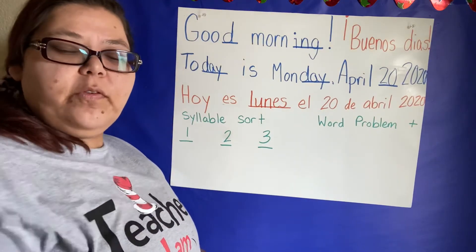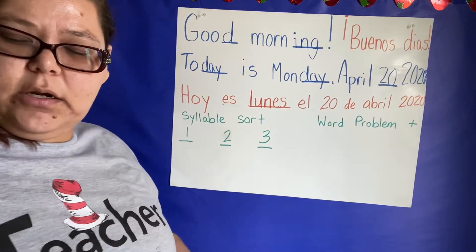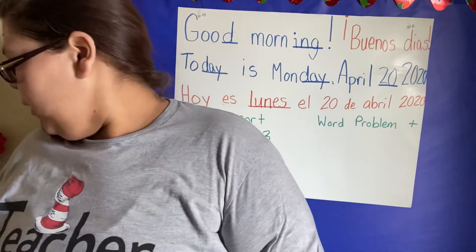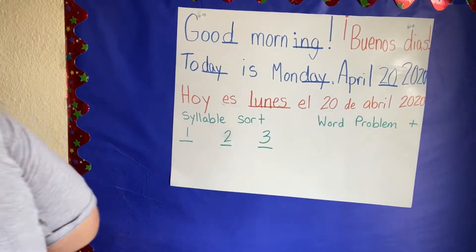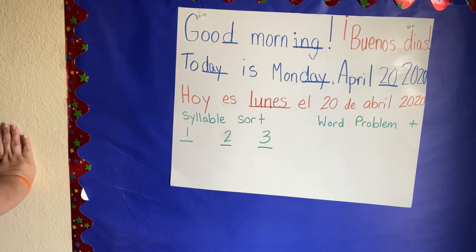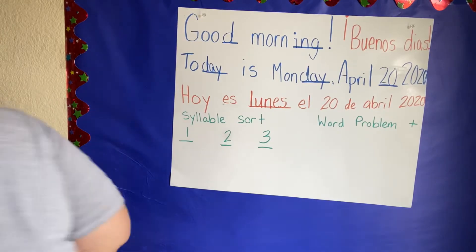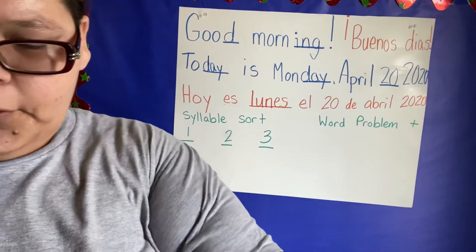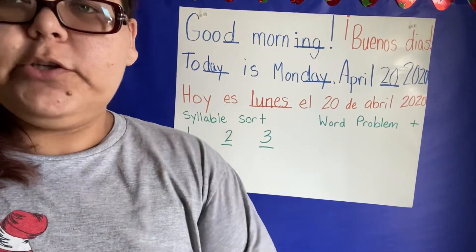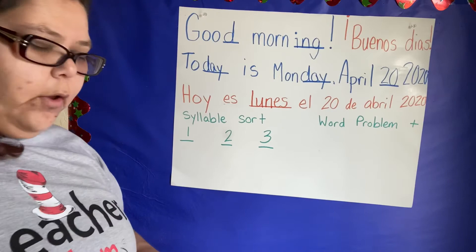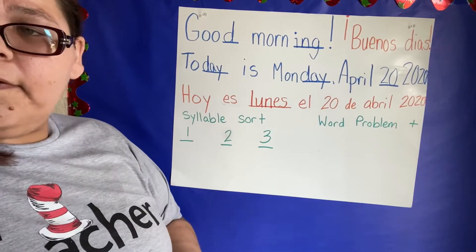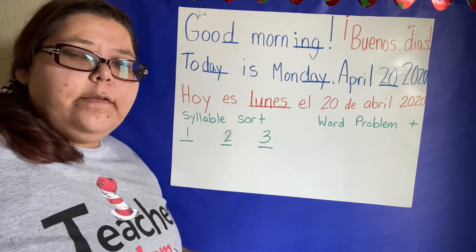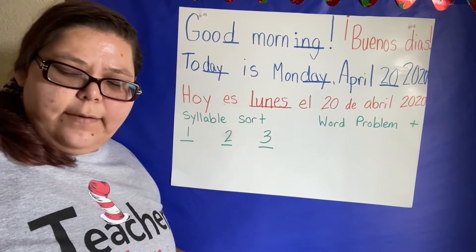So we're going to start with syllable sorting. I have some pictures here and we're going to sort them where they belong. So we're going to need some tape so we can put these pictures where they belong. Remember, when we do syllables, those are not sounds — they're word pieces. So let's look and see what words we have today.